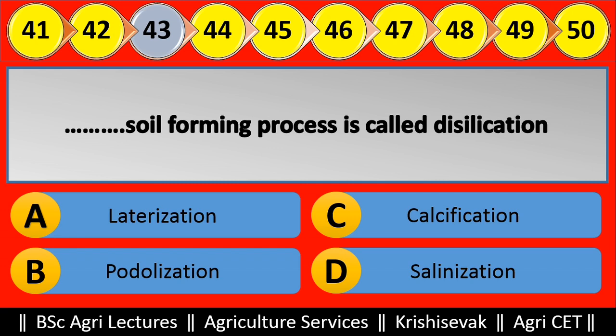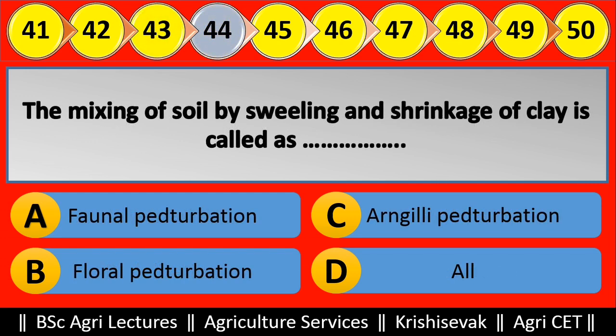Question 44: The mixing of soil by swelling and shrinkage of clay is called blank. Options are: (a) Faunal pedoturbation, (b) Floral pedoturbation, (c) Argillipedoturbation, (d) All. Right answer is Argillipedoturbation, option C.